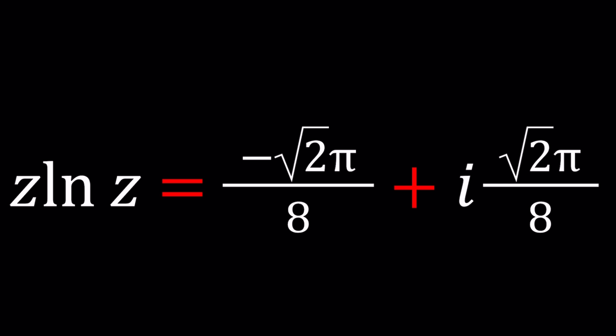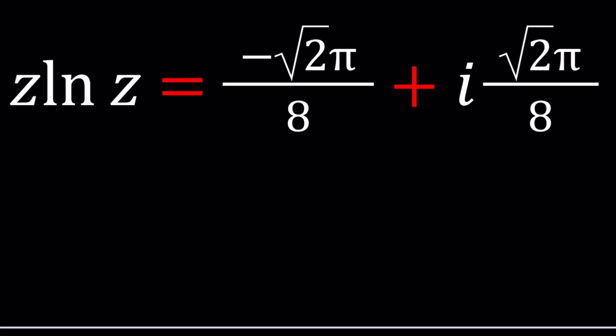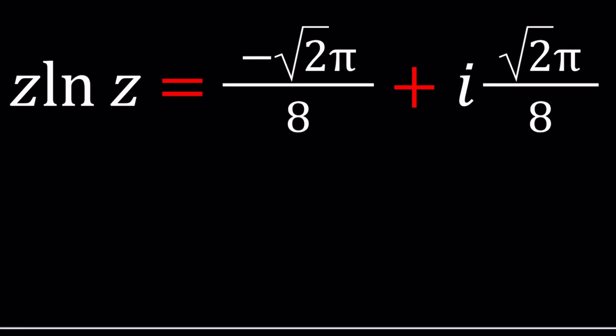Whenever you have something like z multiplied by ln z or z times e to the power z, that is usually calling for a special function. Most of you are familiar with that function. We have a function called W that takes a value like t e^t as input and then outputs the t. It's called the product log, also known as Lambert's W function.